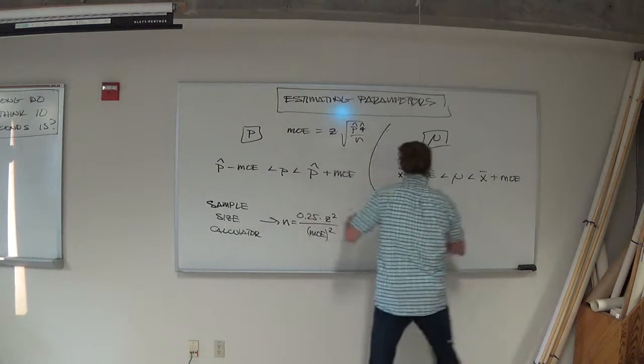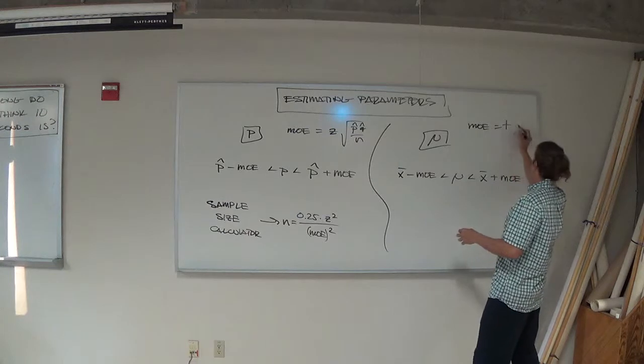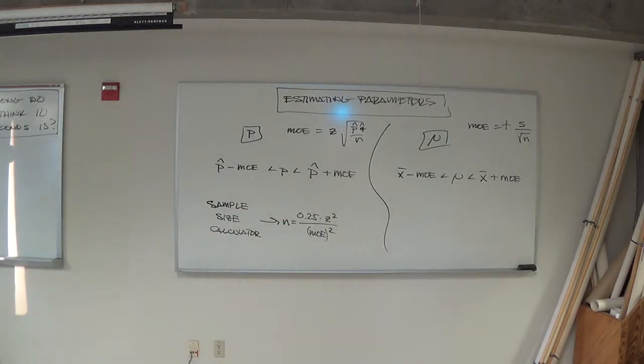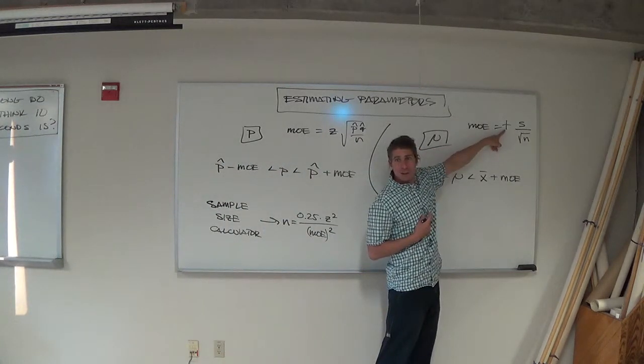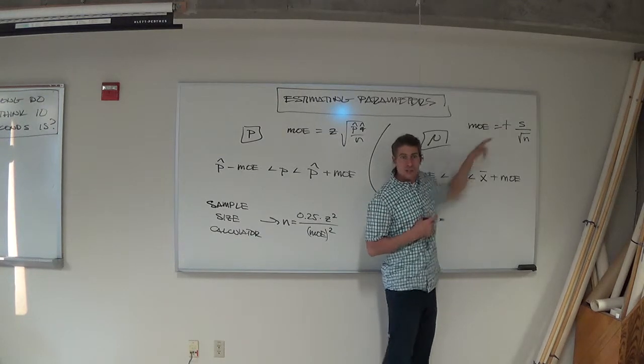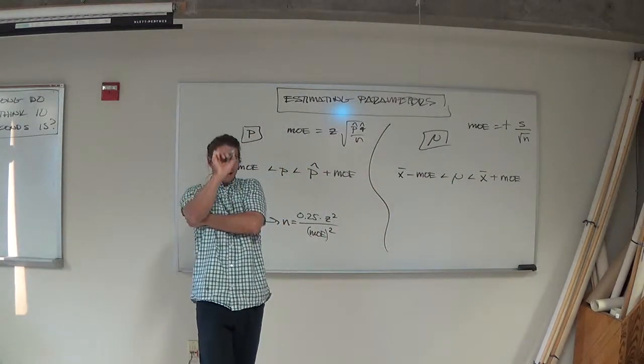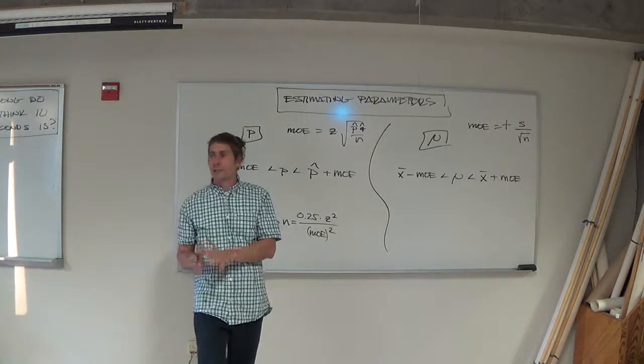The problem is if you look at the margin of error over here, the margin of error for this guy, you've probably already forgotten it from Tuesday and that's okay. It's that t multiplier times little s over root n. So, the problem is you can solve that for n. You totally can. You absolutely can. I mean it's actually easier to solve that guy for n than it is to solve the other one for n because there's fewer variables involved. The problem is the fact that that is t. What does t depend on as one of its only variables? Yes, n. It depends on n.